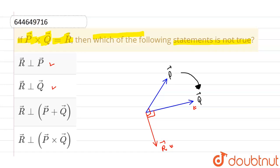Now, coming to third option: R-vector is perpendicular to P-vector plus Q-vector. So P-vector plus Q-vector will lie in the plane of P-vector and Q-vector.